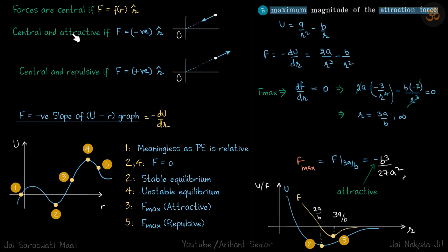Forces are central and attractive if force at a certain point is some negative magnitude times R cap, so the force is attractive towards the origin. Forces are central and repulsive if they are some positive quantity into R cap.